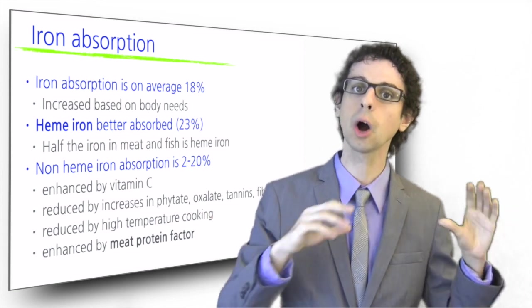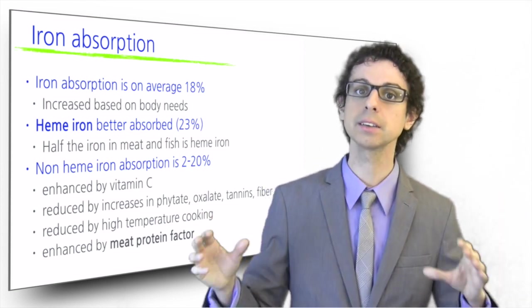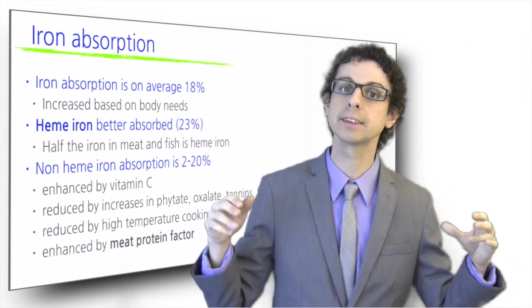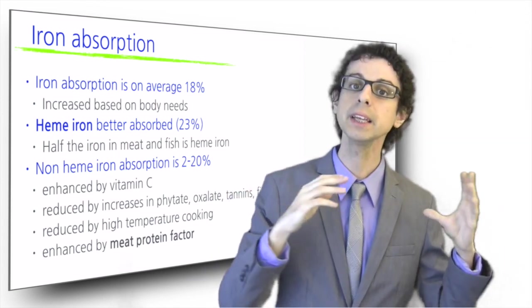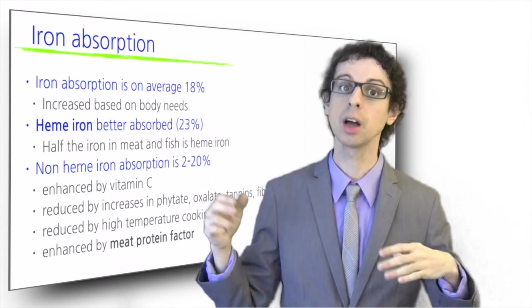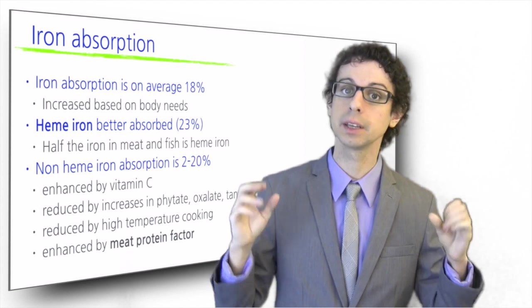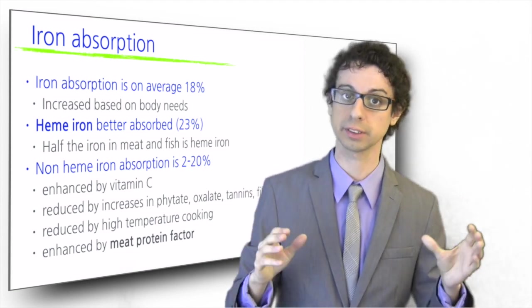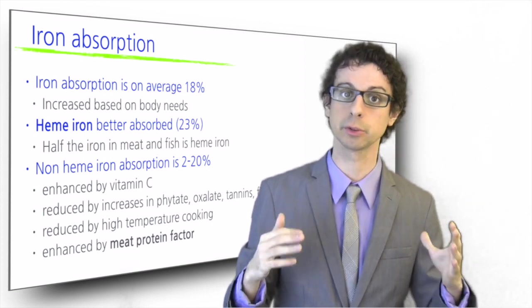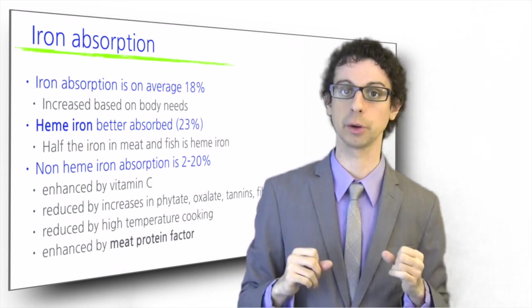For example, if you eat whole grain bread alone, its non-heme iron will be absorbed less efficiently than if you eat a whole grain bread turkey sandwich because the meat protein factor in turkey will enhance iron absorption from the bread as well. If you also add a few slices of tomato to your sandwich, then vitamin C will further enhance iron absorption from both your turkey and your whole grain bread.